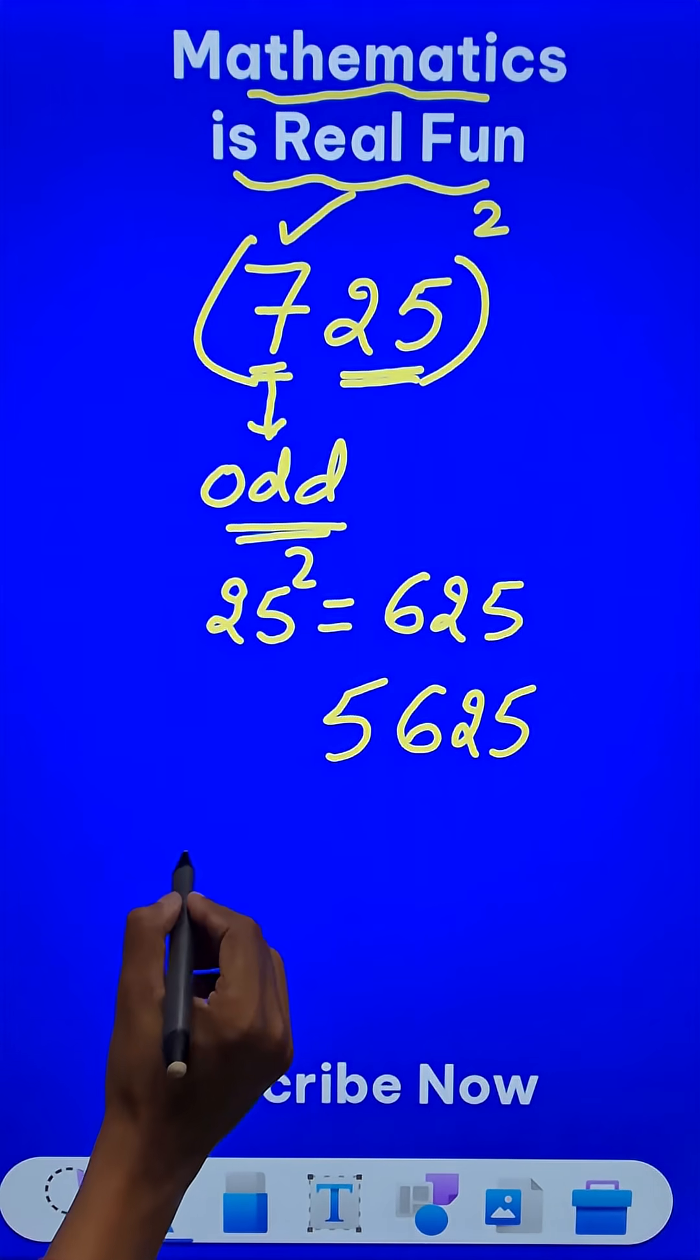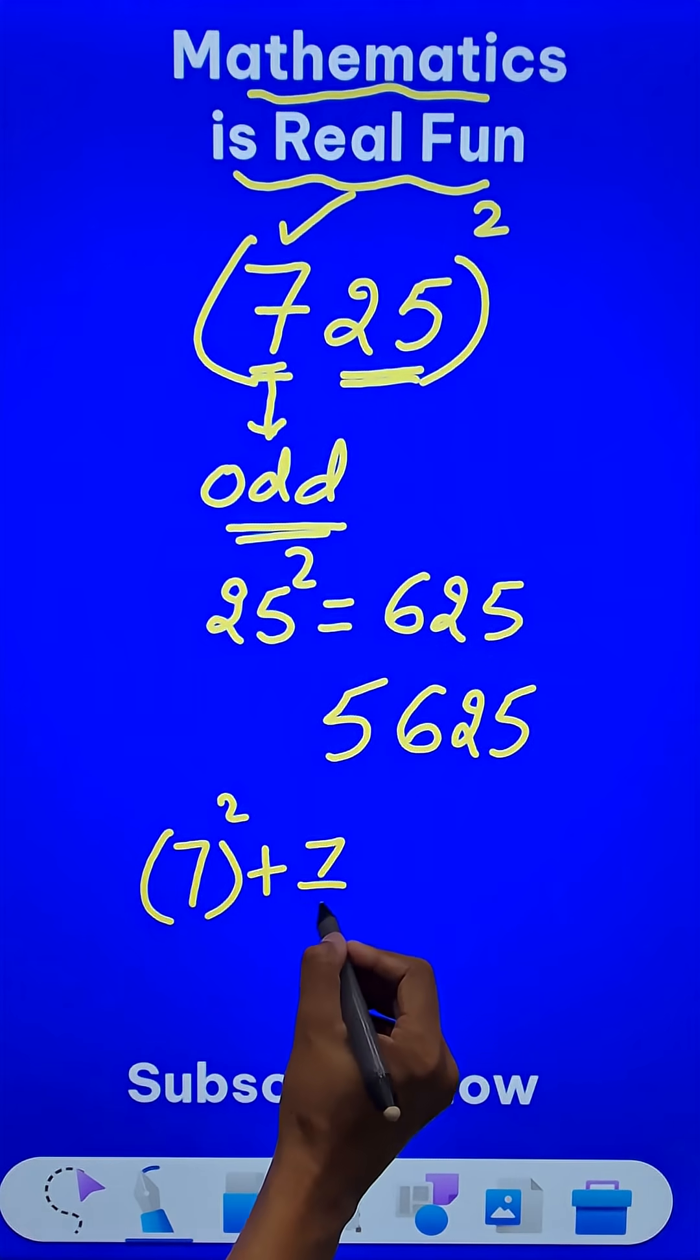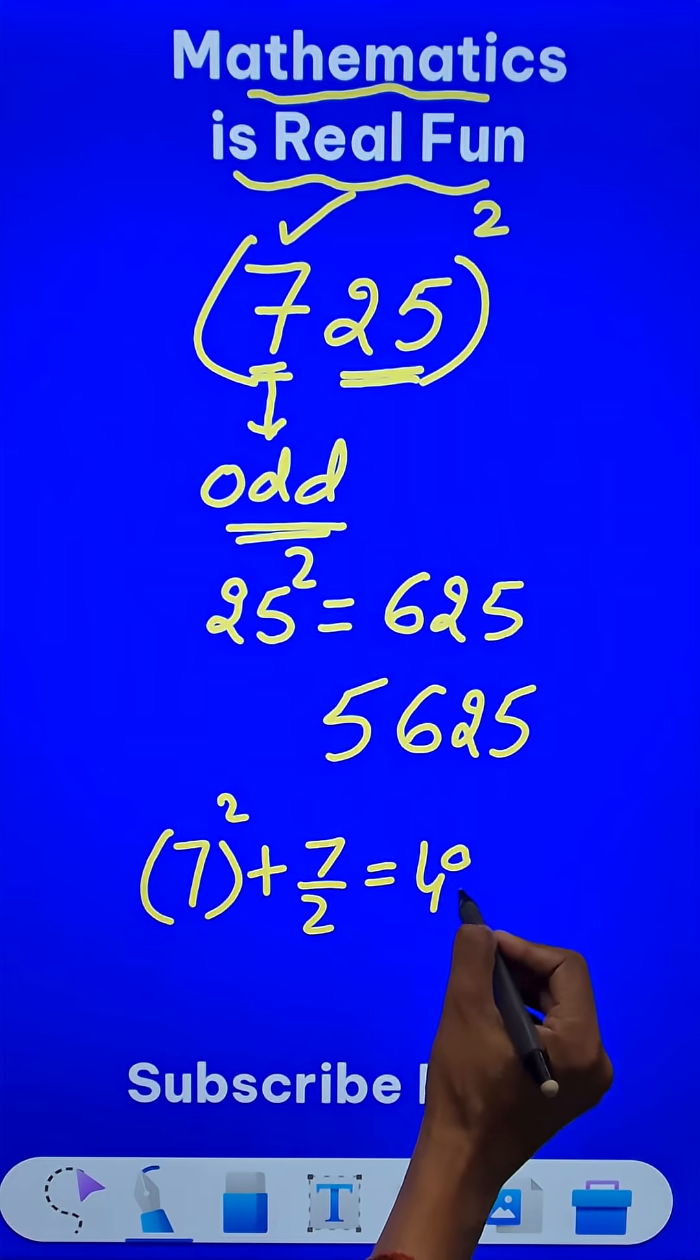The remaining number 7 has to be squared, and then we will add half of 7 to this result. This will give us a decimal: 49 plus...